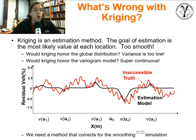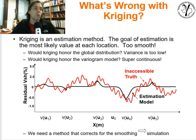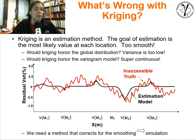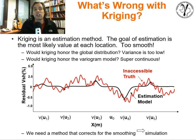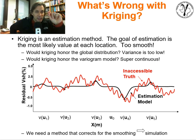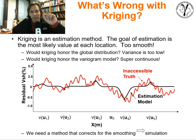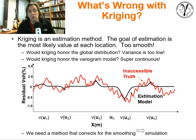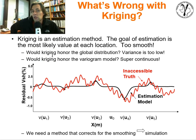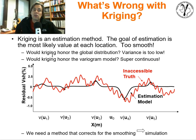We're motivated by the fact that there is something just wrong with kriging. Well, if we look at kriging, what we'll find is that it is an estimation method. It does its job very well. Its job is to get at each single location in space the very best value — the most likely value at each location, the kriging estimate.